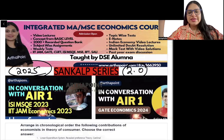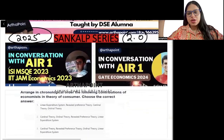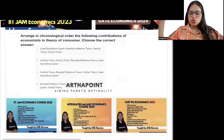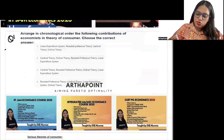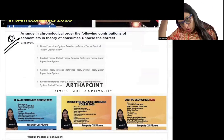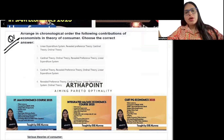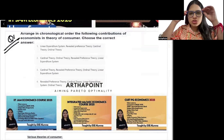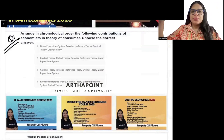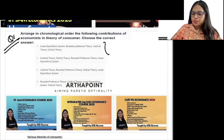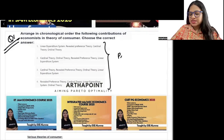Let us go ahead and start our day. First question, question number one. Read carefully. Arrange in chronological order the following contributions of economists in the theory of consumer. Choose the correct option. Four options are given to you — you have to place these in the right chronological order.